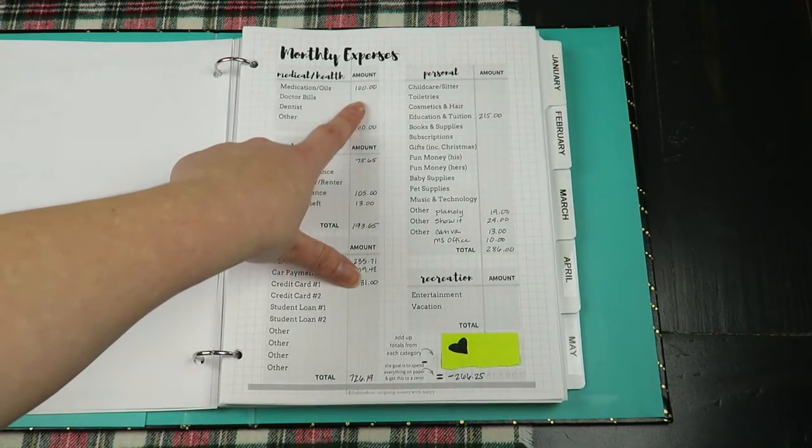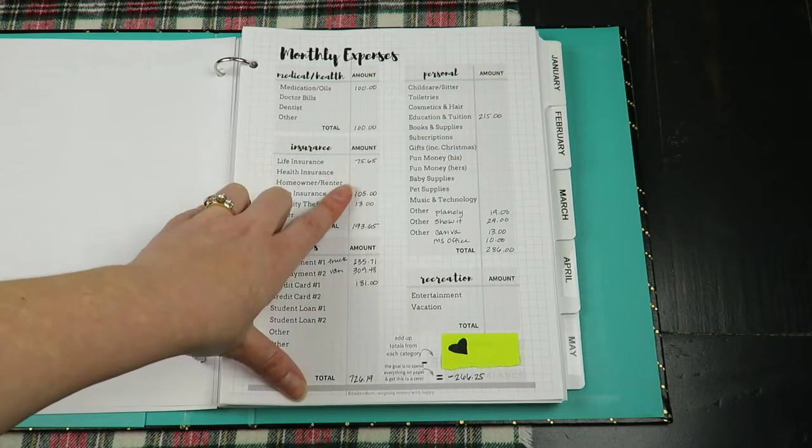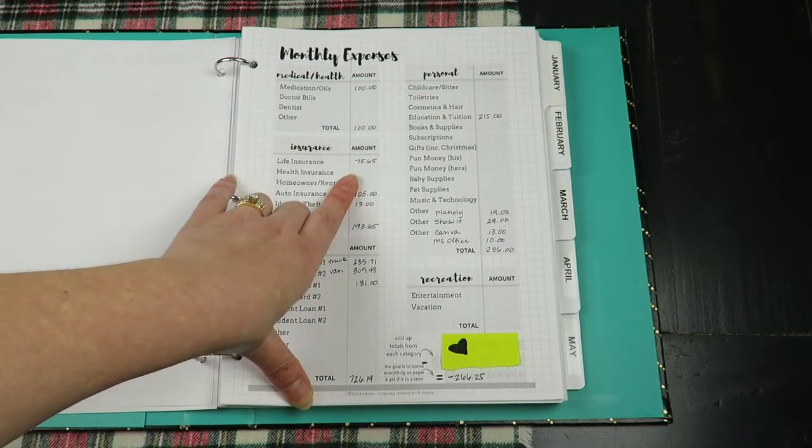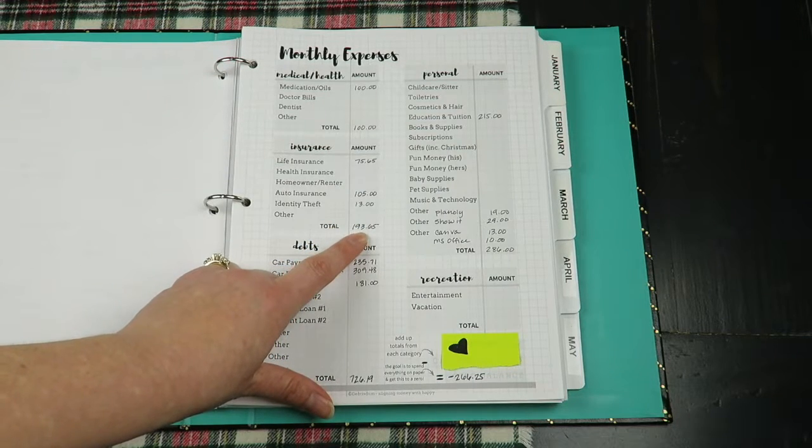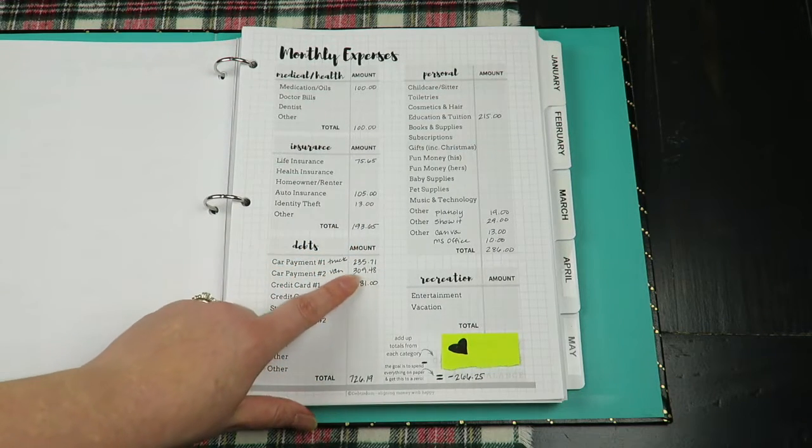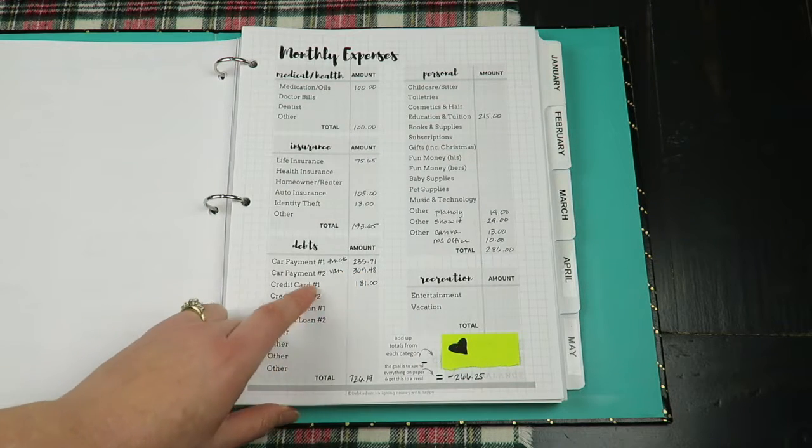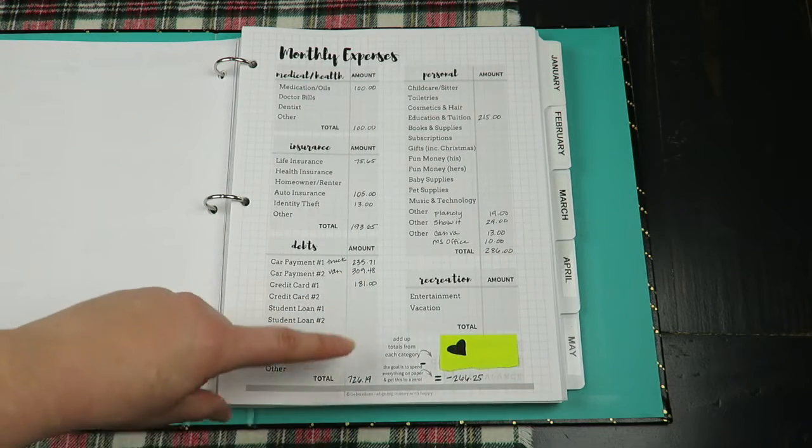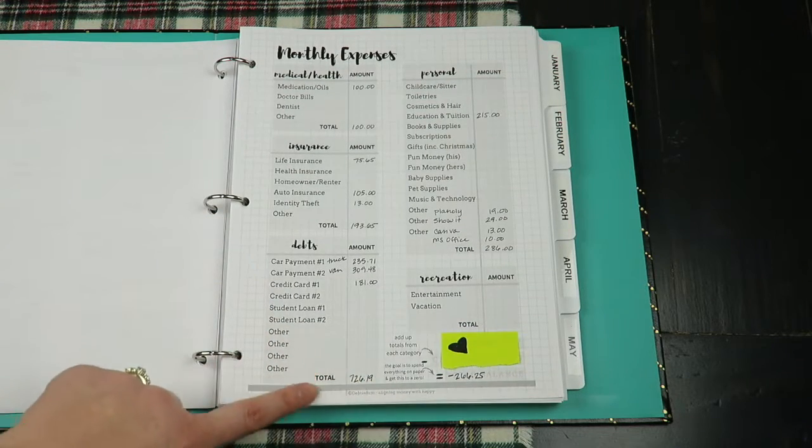Nothing for clothing. Medical oils, we don't get medication but we get oils. doTERRA is $100, I cut that back this month. Life insurance, auto insurance, identity theft, that totals $193.65. Our debt: we own our truck, our van, and a Visa card. Total our debts is $726.19. We are so excited to have that be zero and we will get there.